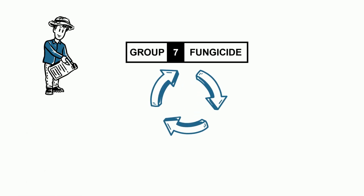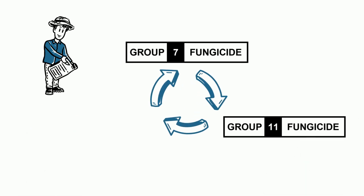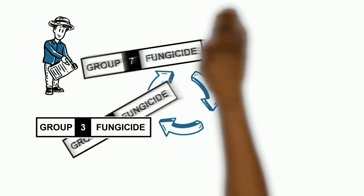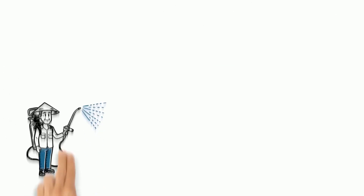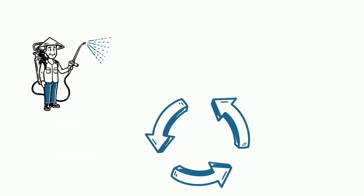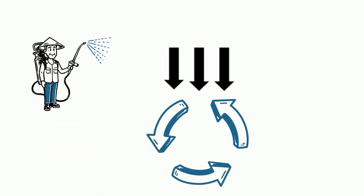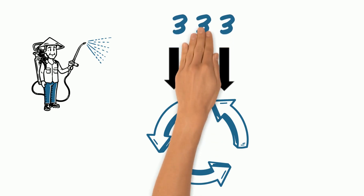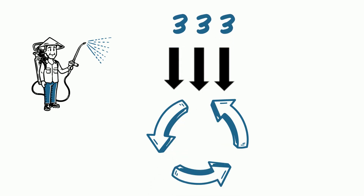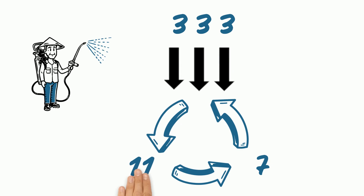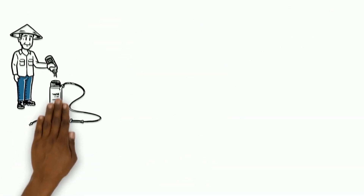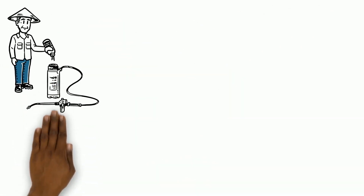Farmers can use a different mode of action for each application, each one followed by the other. Or farmers can apply a block of fungicides with the same mode of action, then rotate to a different mode of action, and then change again.